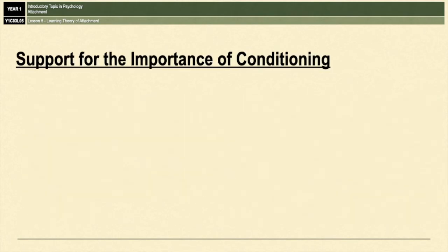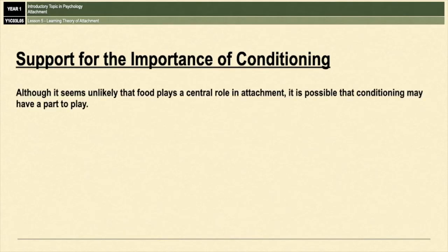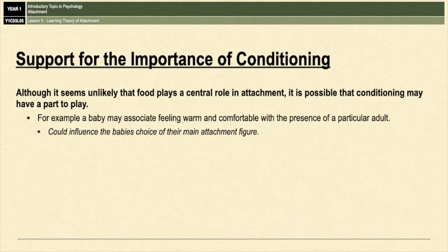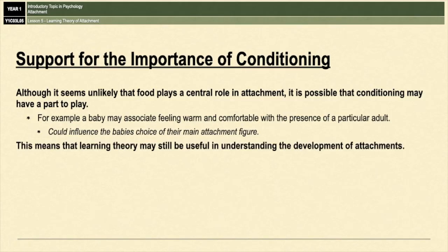There is also some support for the importance of conditioning. While it's unlikely that food plays a central role in attachment, it is possible that conditioning does have a small part to play. For example, babies might learn to associate feeling warm and comfortable with the presence of a particular adult, which could influence the baby's choice of main attachment figure. This suggests learning theory could still be useful in understanding attachment, but may need a tweak since it may not necessarily be all about food.